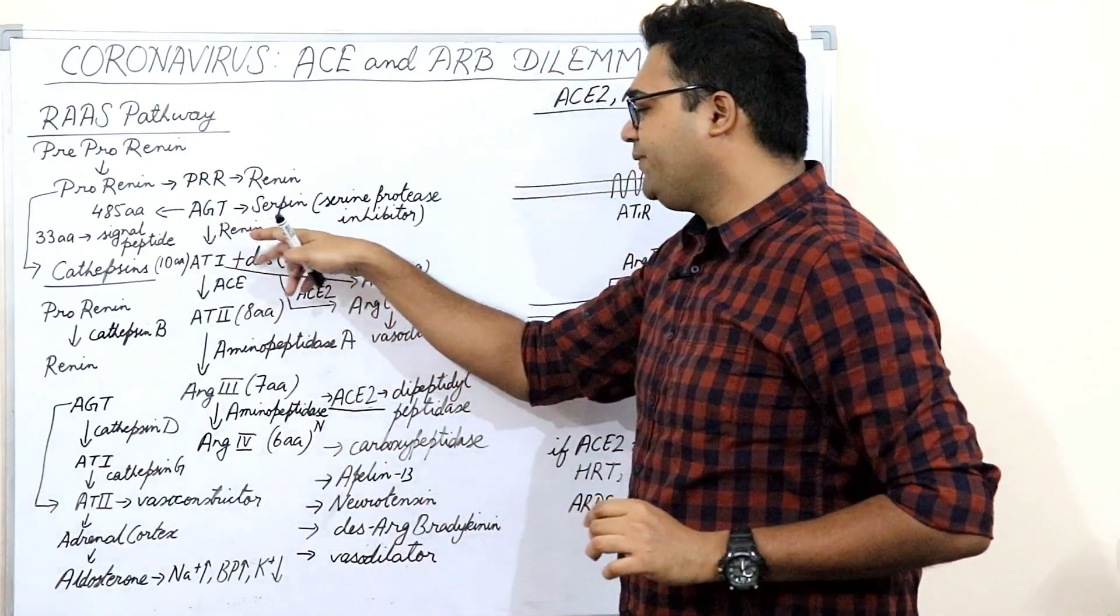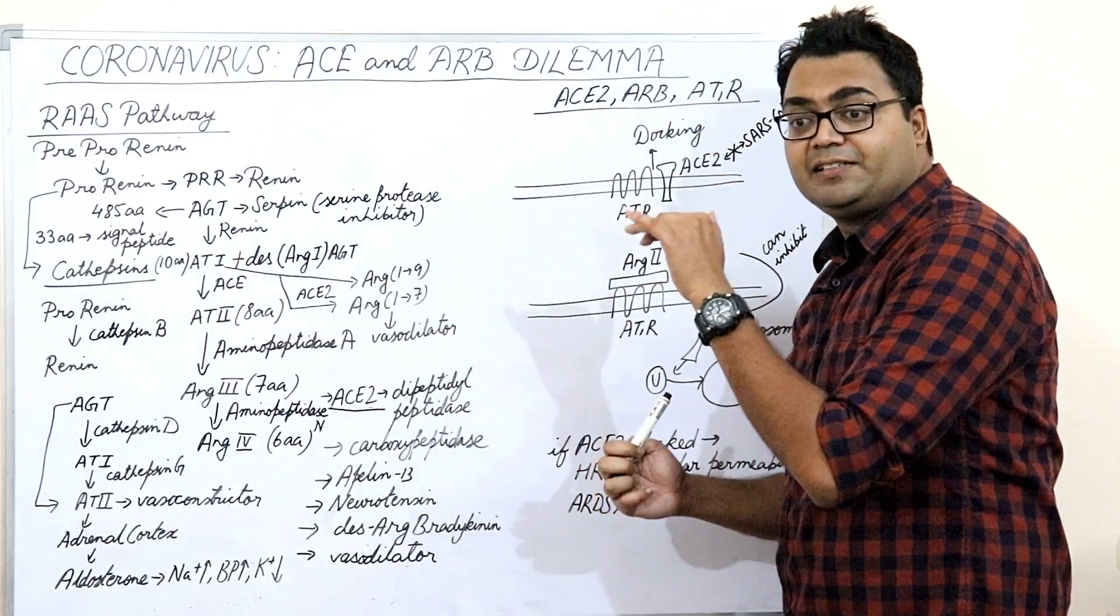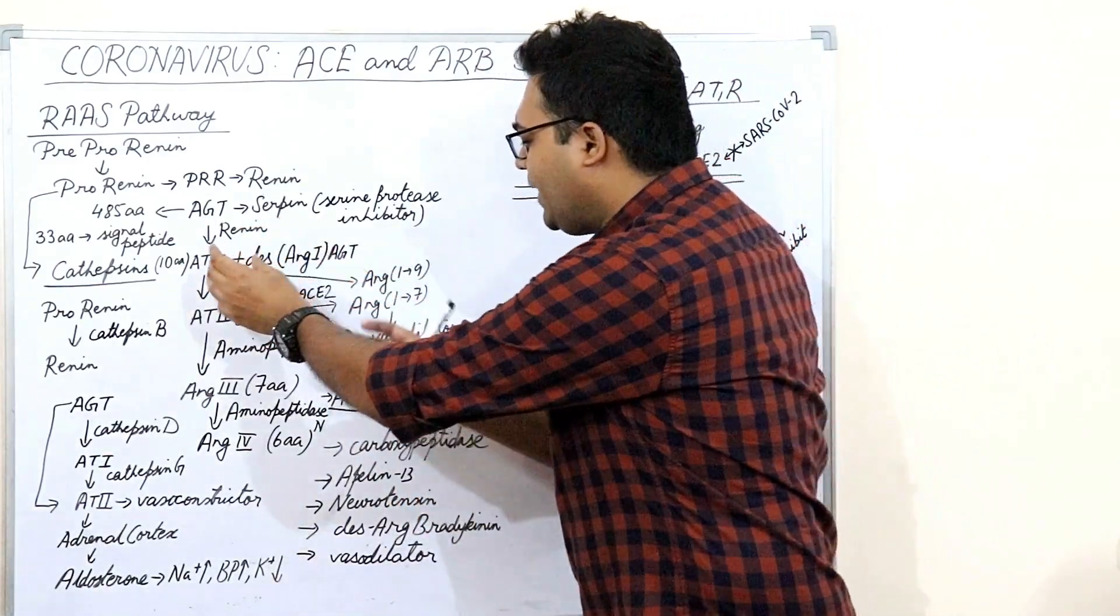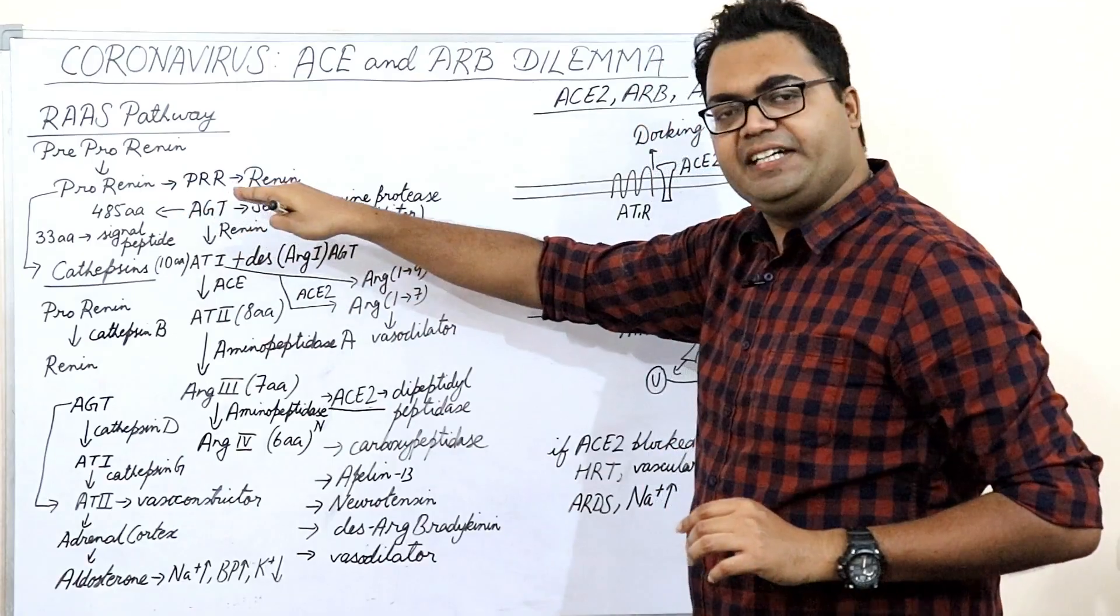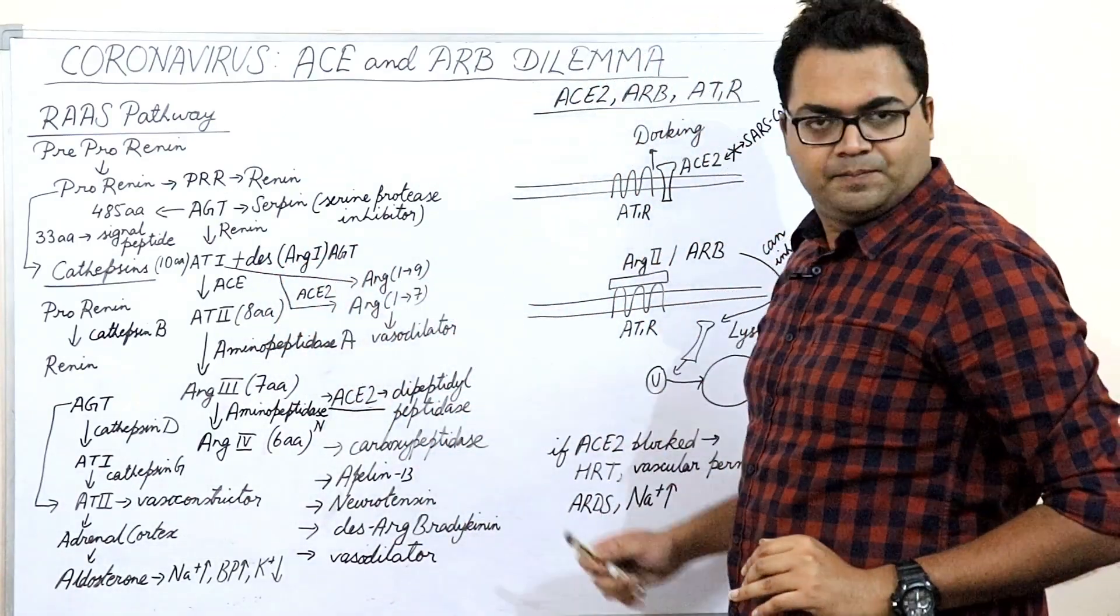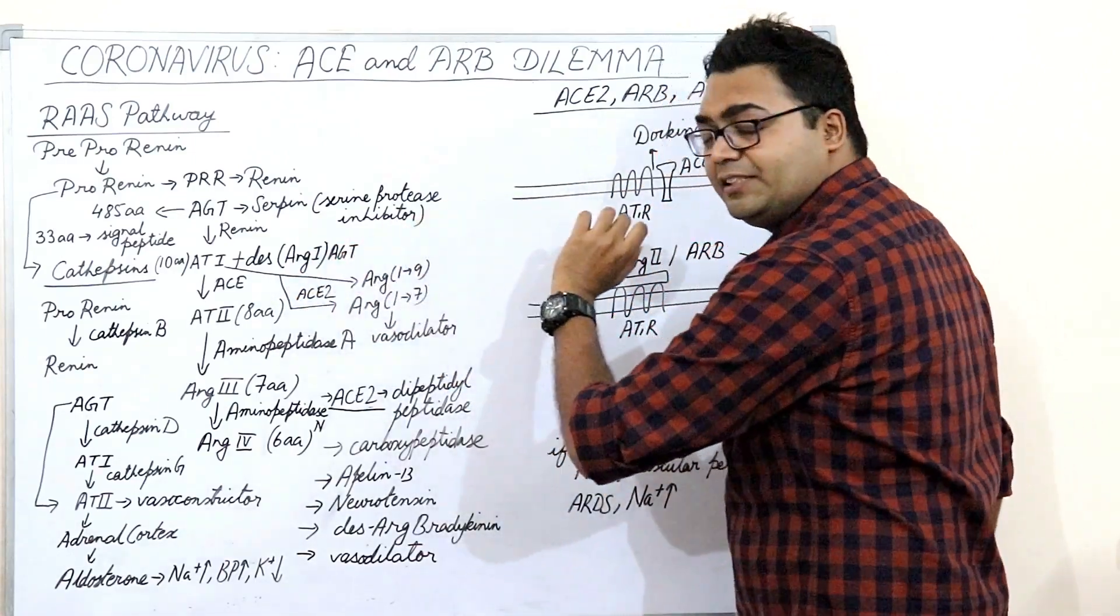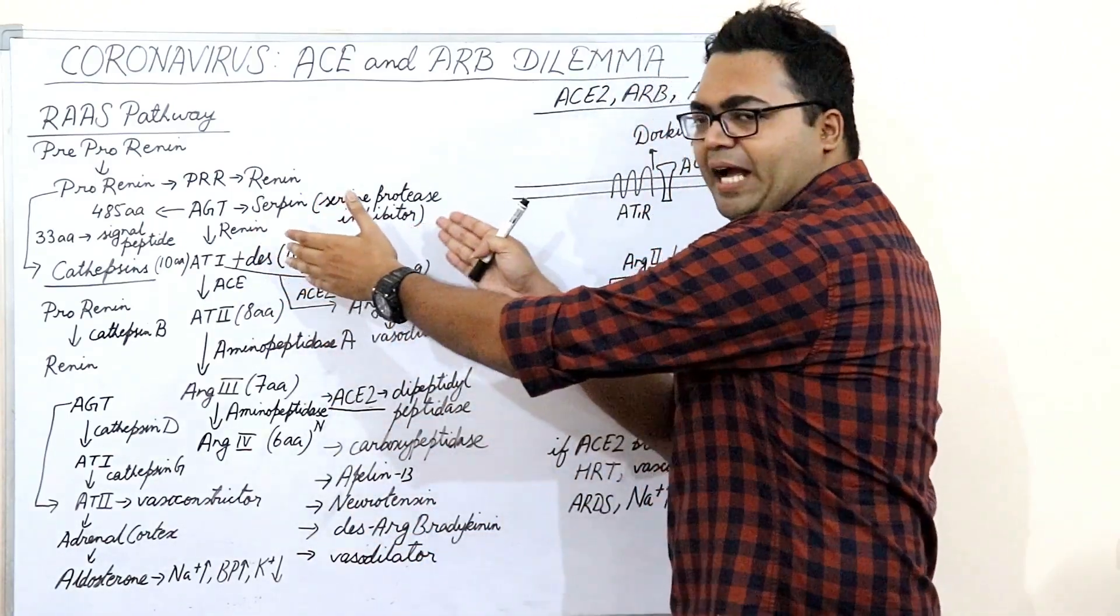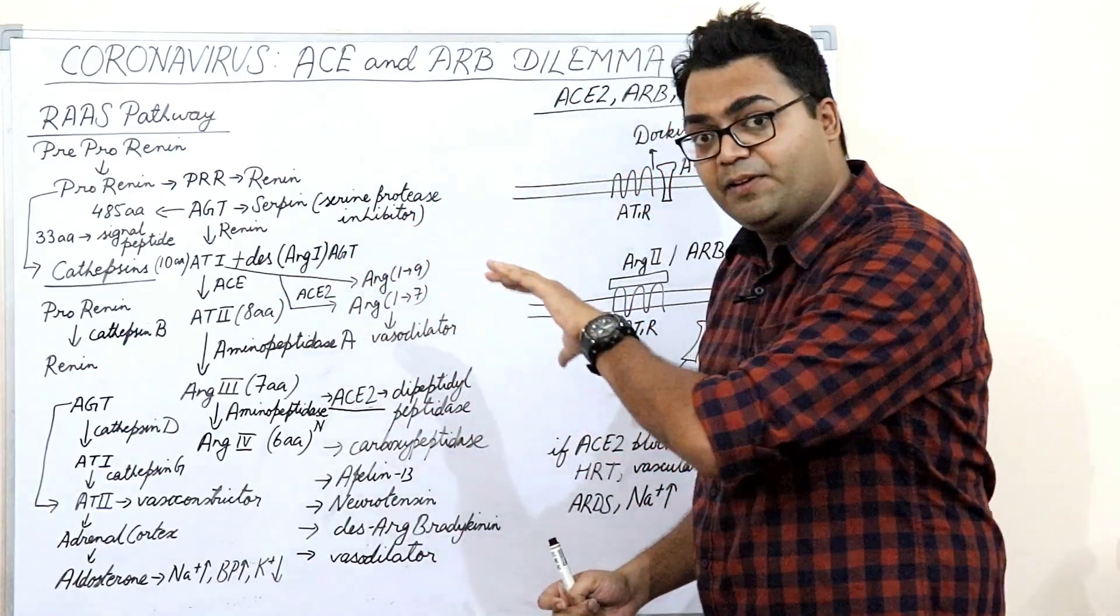Angiotensinogen, after cleavage by a specific granzyme, is of 455 amino acids and 33 amino acids is the signal peptide which lets it go through the endoplasmic reticulum. It cleaves out 10 amino acid residues and forms angiotensin-1. Angiotensinogen, AGT, becomes angiotensin-1 which is of 10 amino acids. Plus, you have a des-angiotensinogen. What is the use of des-angiotensinogen? Scientists are not able to decipher the use. It is a big fragment about 455 amino acids.